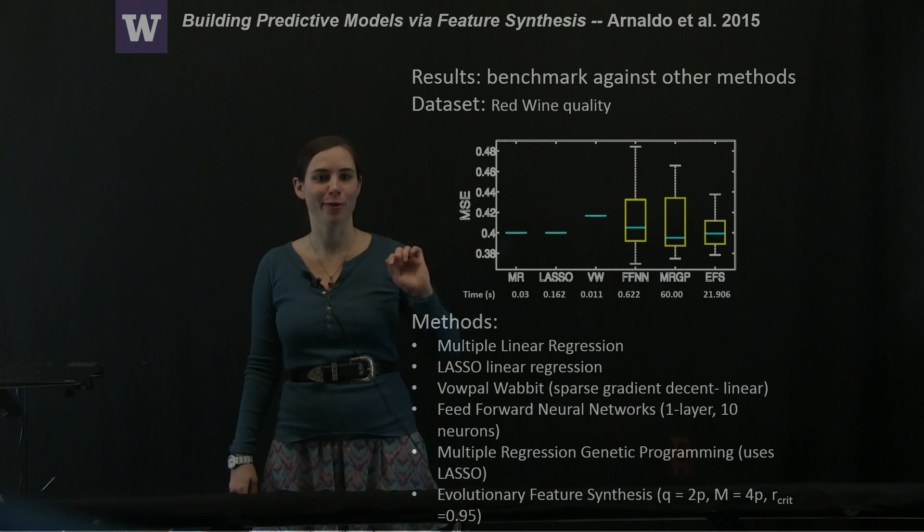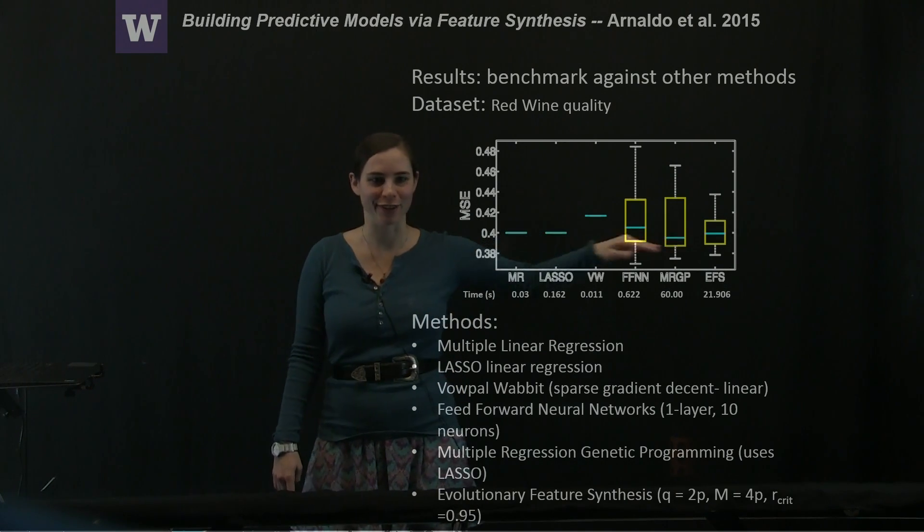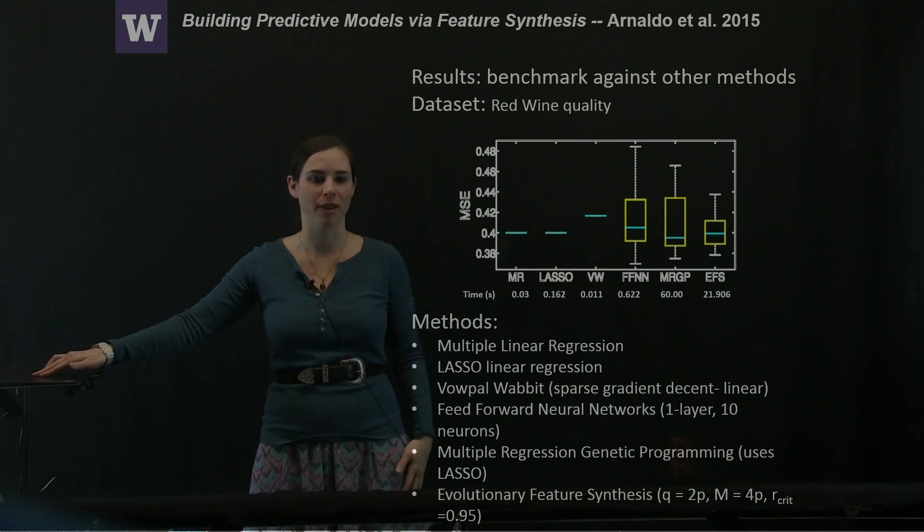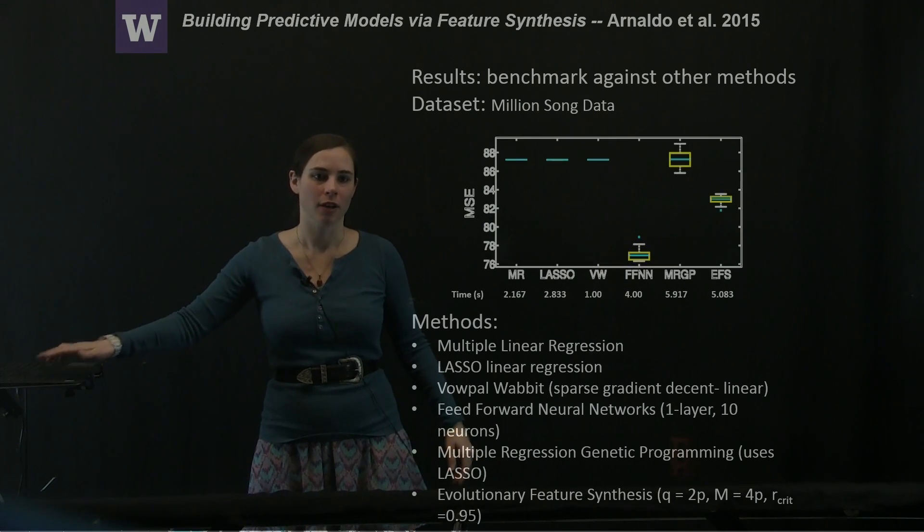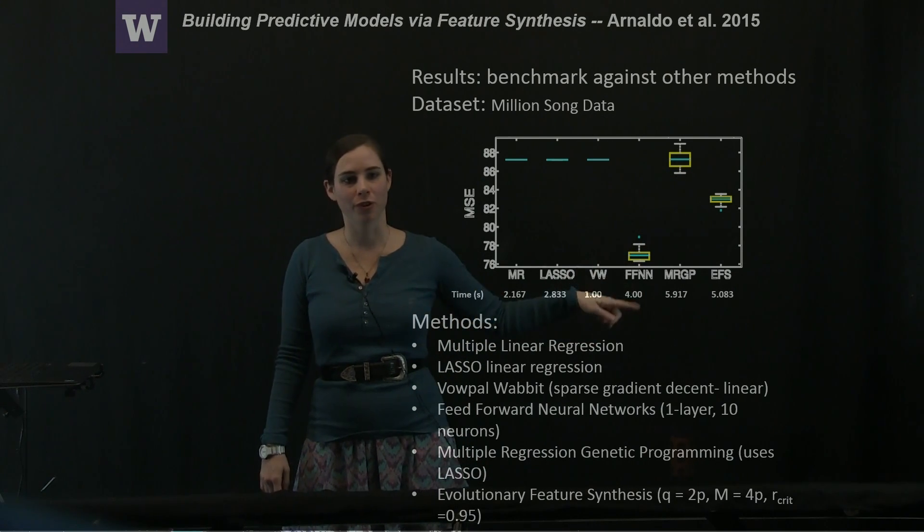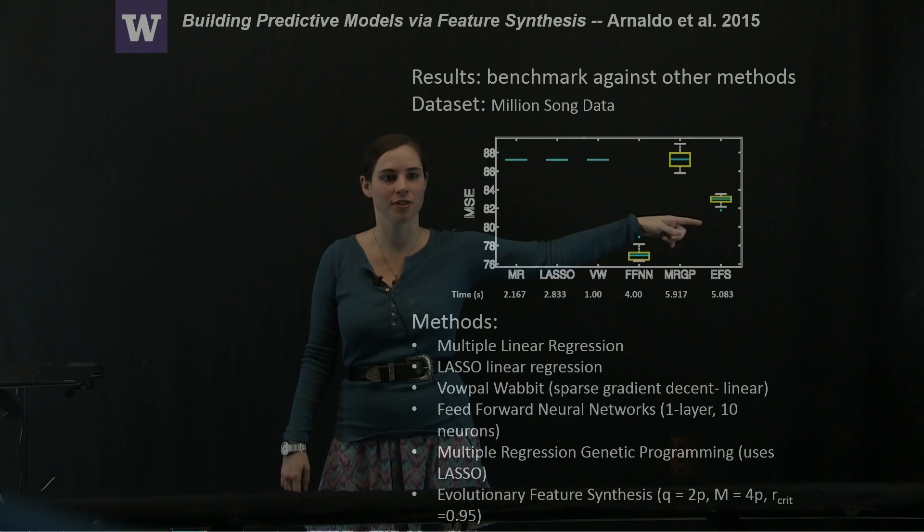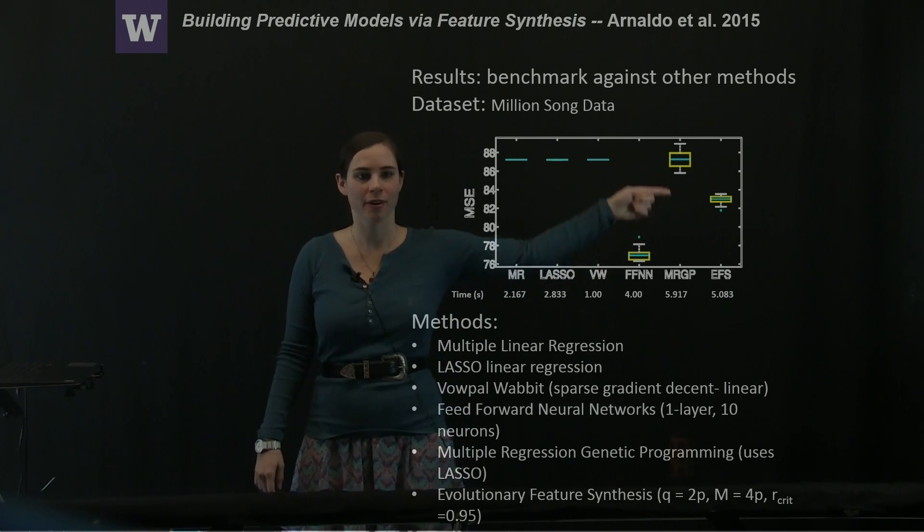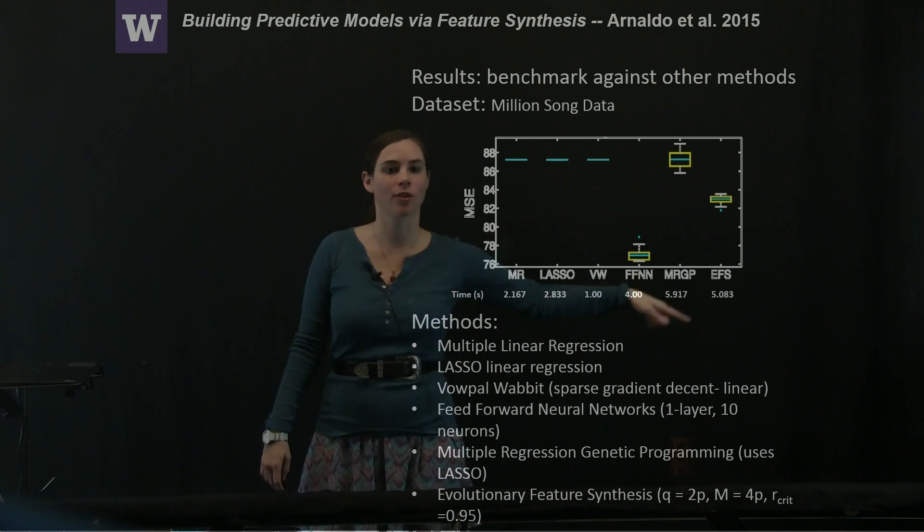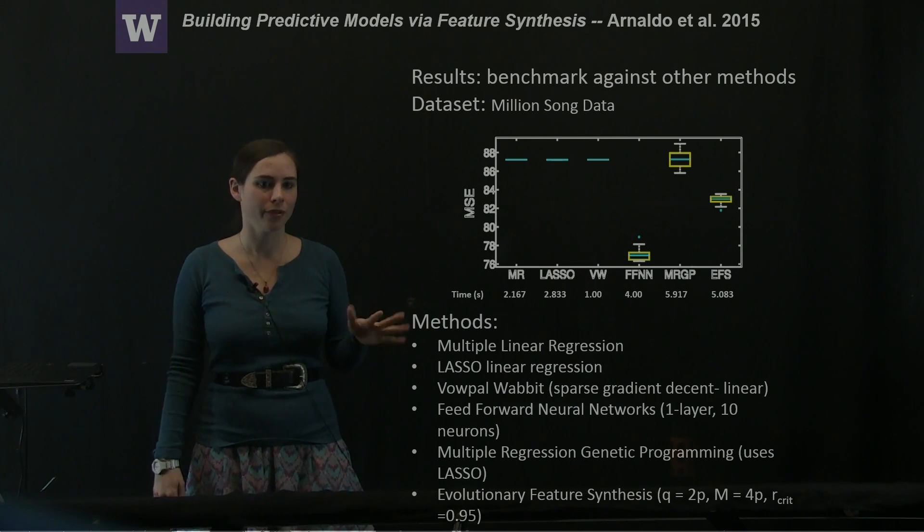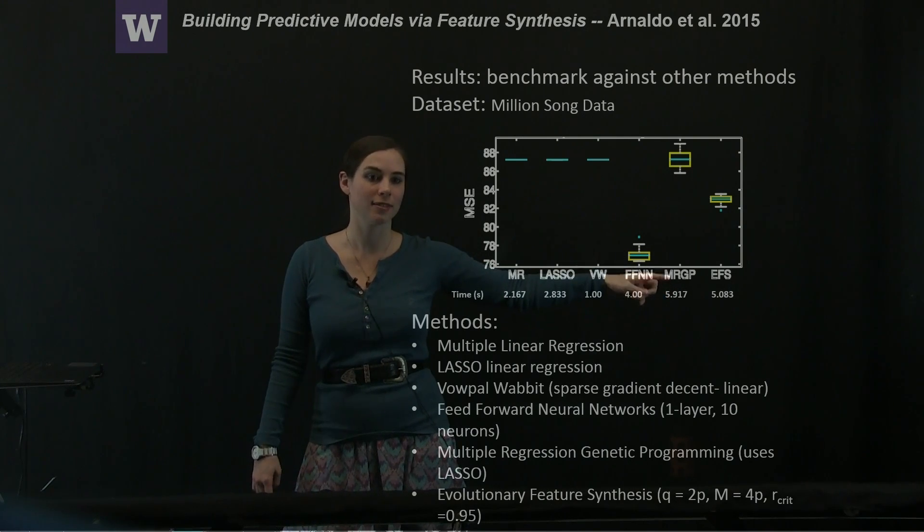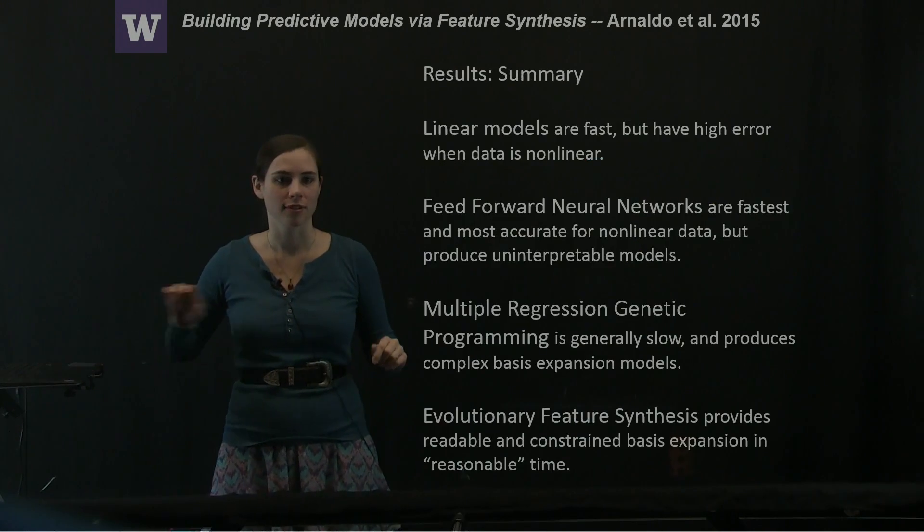It looks like the red wine quality dataset is well described by linear models, and there's not really that much improvement with the nonlinear methods. And here's an example where the feedforward neural net does very well, the evolutionary feature synthesis model does slightly better, and all of the rest of them do around the same. And in this case, all of these nonlinear methods end up being around the same amount of time, although the multiple regression genetic programming is still slower than the evolutionary feature synthesis.